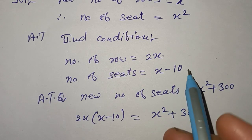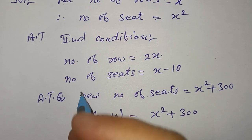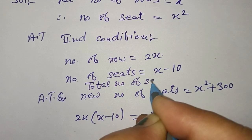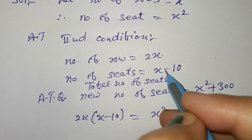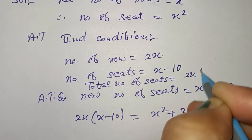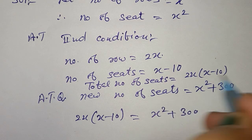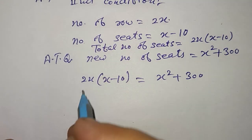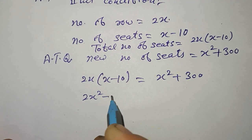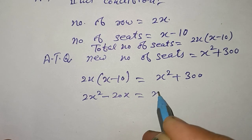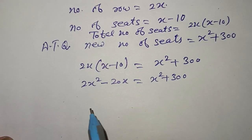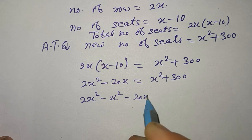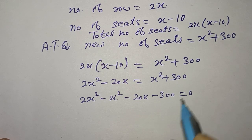Solve: 2x² minus 20x = x² plus 300. 2x² minus x² minus 20x minus 300 = 0. x² minus 20x minus 300 = 0.